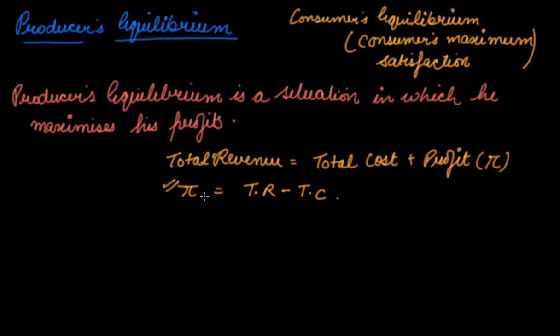So when you maximize your profit, you are at equilibrium. You can either maximize this profit by increasing your total revenue or by decreasing your total cost. These are only the two situations where you can maximize your profit.